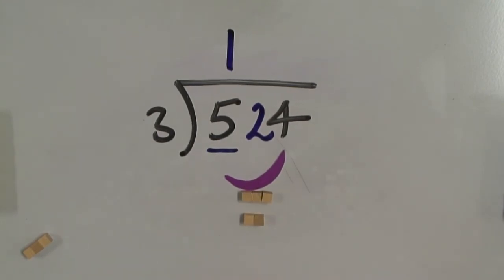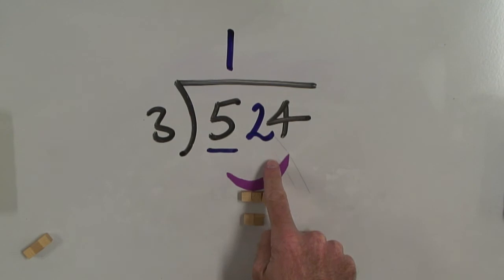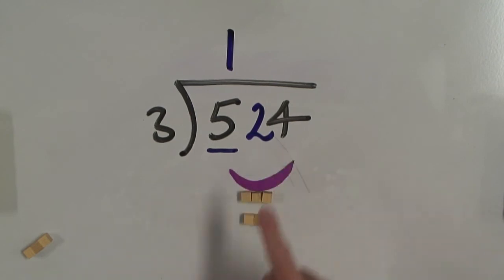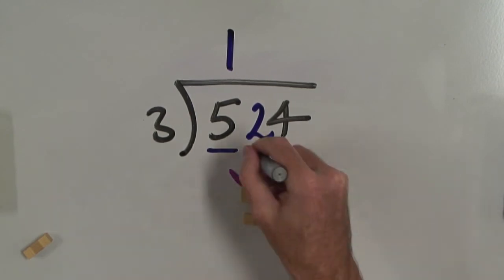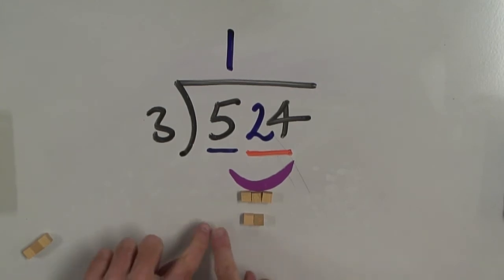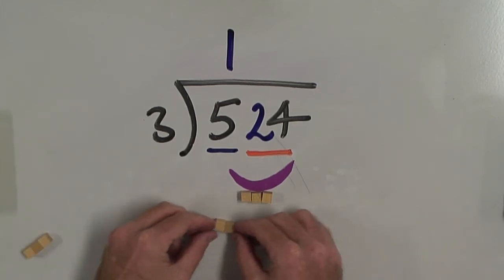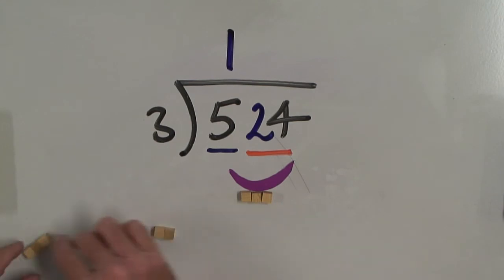And now it's 3 bites out of 24. The next number we're going to bite out of is 24.